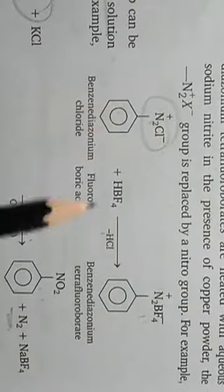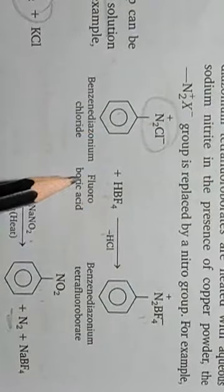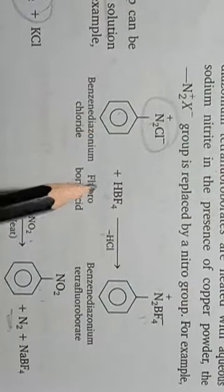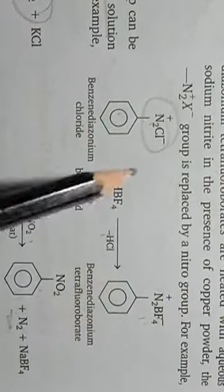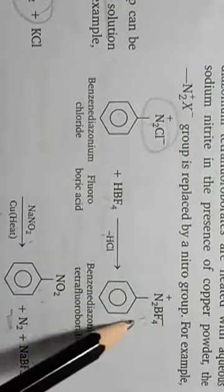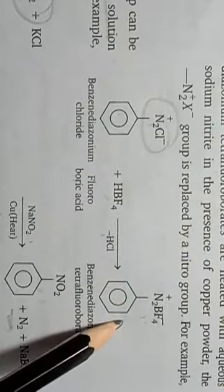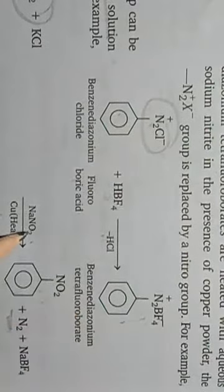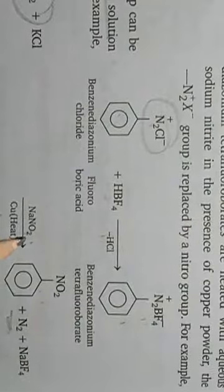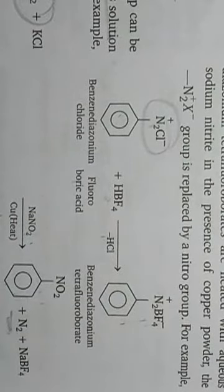To summarize the nitro group replacement: in the first step, the diazonium salt is treated with fluoroboric acid and benzene diazonium tetrafluoroborate is formed; upon heating in the presence of sodium nitrite and copper, nitrobenzene is produced.